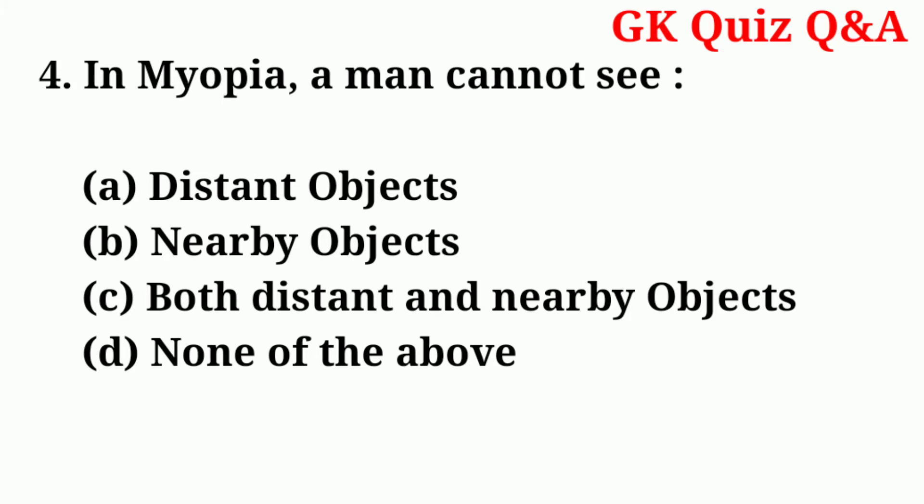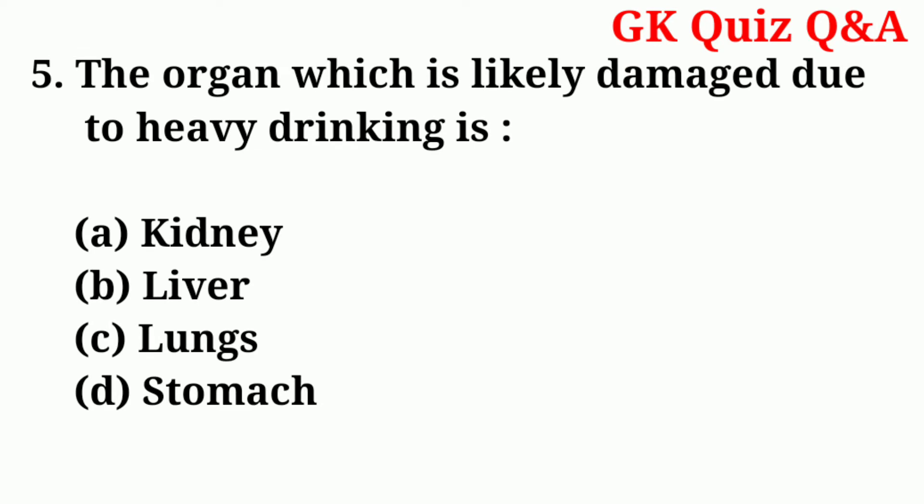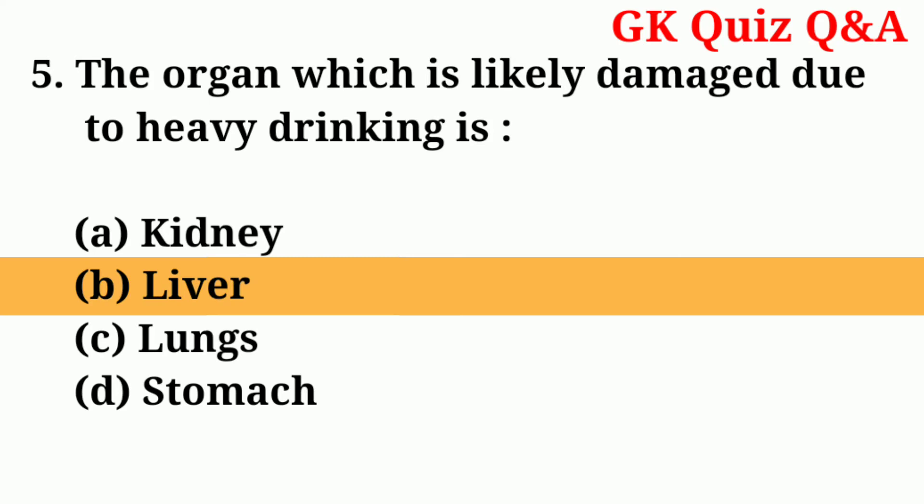Answer: number A — distant objects. Number five: the organ which is likely damaged due to heavy drinking is — answer: number B — liver.